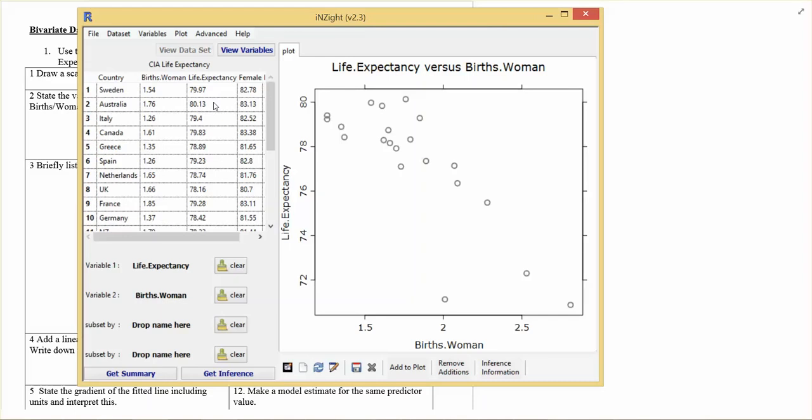So it's the average births per woman and the average life expectancy in those countries, some of which have a much bigger population than others. This point down here I'm looking at, where the births per woman is just over two but the life expectancy is below 72.